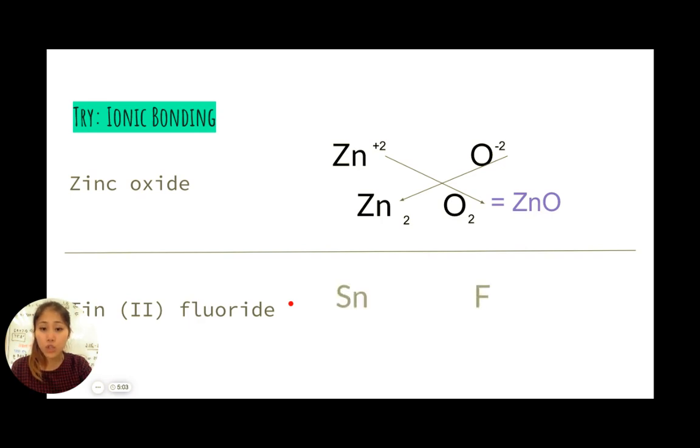Fluorine is a fixed charge. So we know fluorine is always going to be minus 1 because it's in group 7 of the periodic table. Tin(II) means tin is plus 2. Fluoride, fluorine is minus 1.